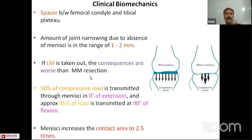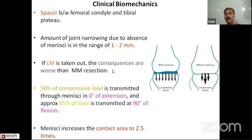Regarding clinical biomechanics, the menisci function as a spacer between the femoral condyle and the tibial plateau. If the menisci are removed, joint narrowing of around one to two millimeters can occur, and removal of the lateral meniscus has worse consequences than removal of the medial meniscus. At zero degrees of extension, about 50% of the compressive load is transmitted through the menisci, increasing to around 85% at 90 degrees of flexion. The menisci increase the contact area to around 2.5 times.